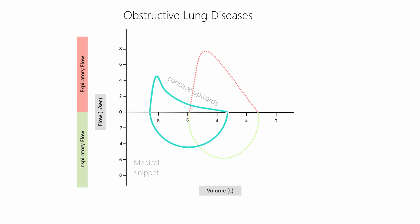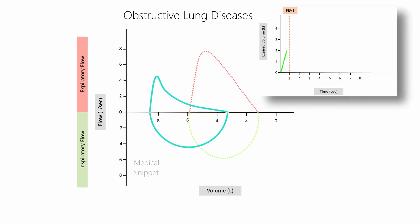Since there is more air trapping in obstructive lung disease, residual volume increases and total lung capacity also increases without much change in forced vital capacity. The loop shifts to the left of normal. On the expired volume-to-time graph, there is a decrease in FEV1 while FVC remains almost normal, so the FEV1 to FVC ratio is less than 0.7.